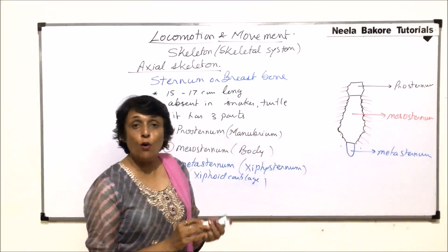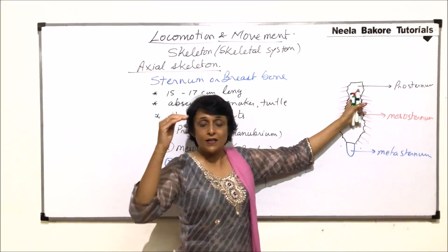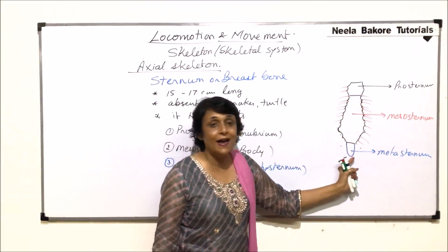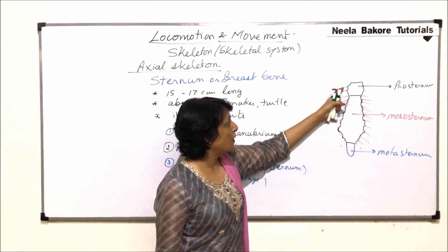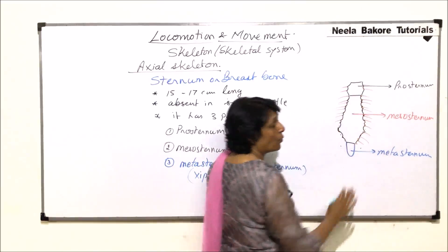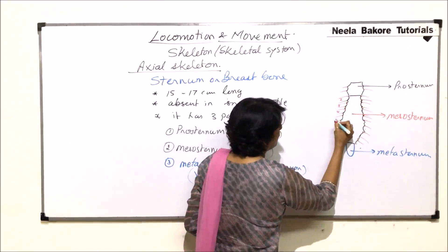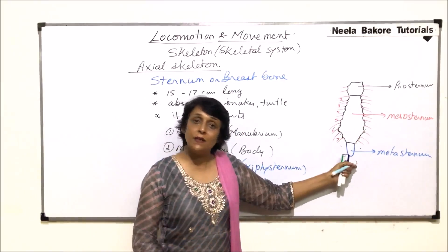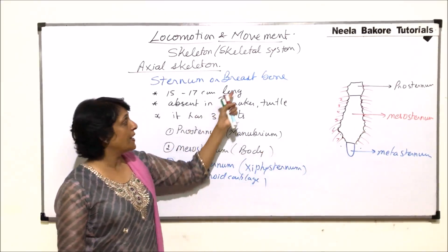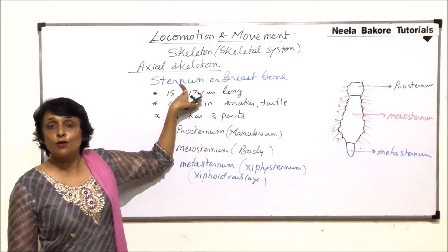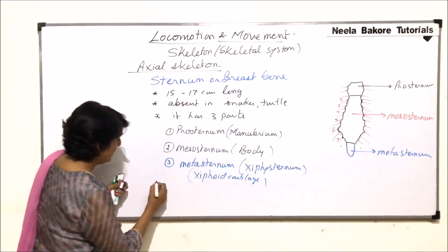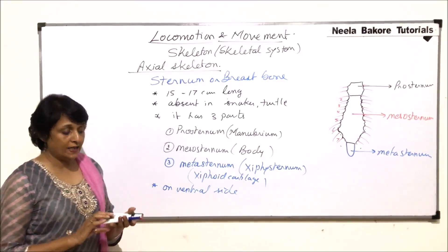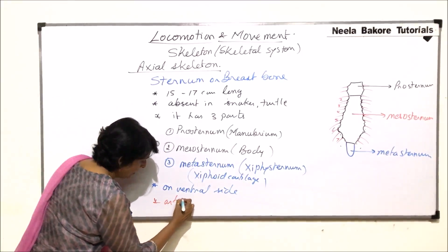When we talk of the breast bone, there are three pieces: the uppermost part is the prosternum, then the mesosternum, and then the metasternum. The metasternum is cartilaginous. The first pair of ribs articulates with the prosternum; the second through seventh articulate with the mesosternum; and there is no articulation of any rib with the metasternum. This bone — the sternum — is present on the ventral side, and its function is to provide articulation for the ribs.